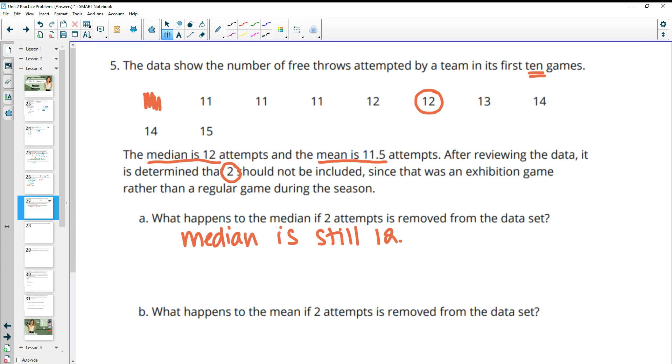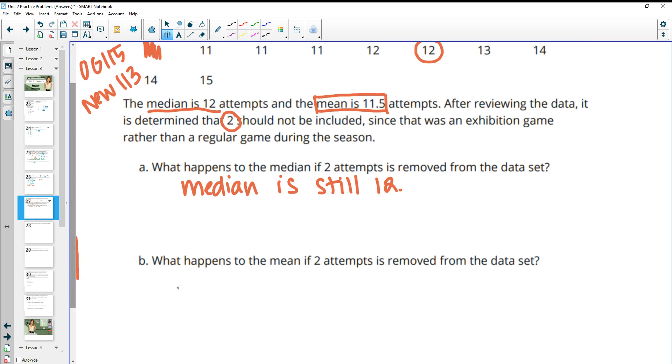But what happens to the mean if the two is removed? So we know the original mean is 11.5. And we did that by adding all the numbers and dividing by 10. So in this case, the original total was 115. The new total without the two is going to be 113. And then we only have nine games now. So now we'll do 113 divided by nine for our mean. And now our mean goes up to 12.55. So it goes up about a little over a point there.